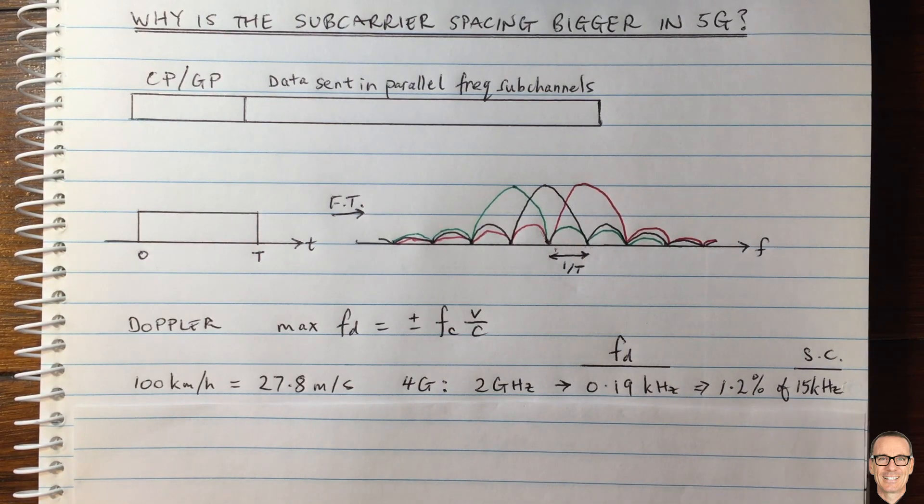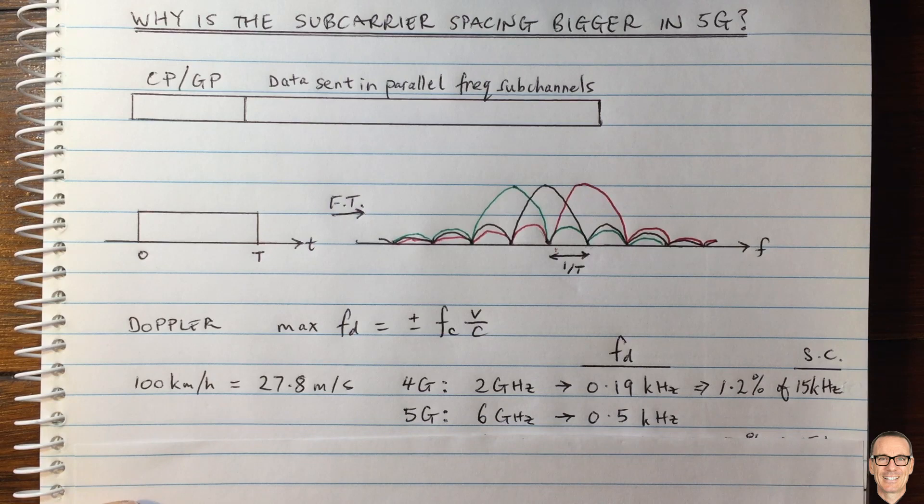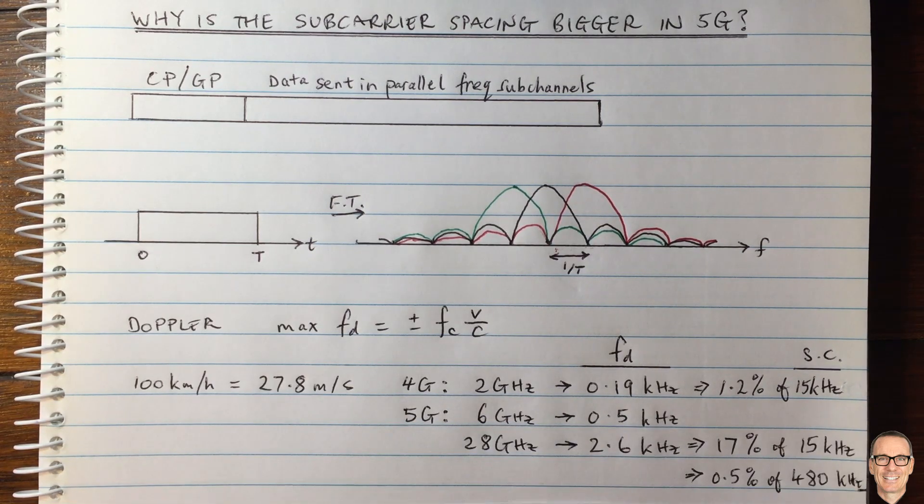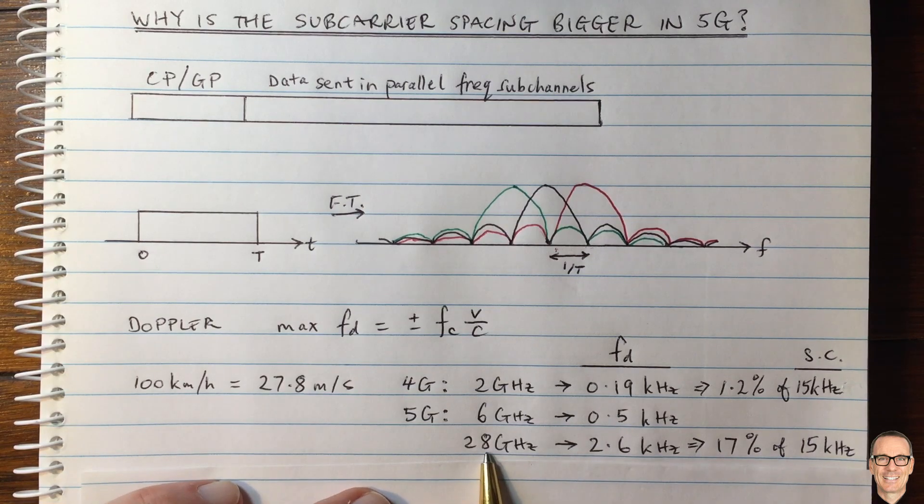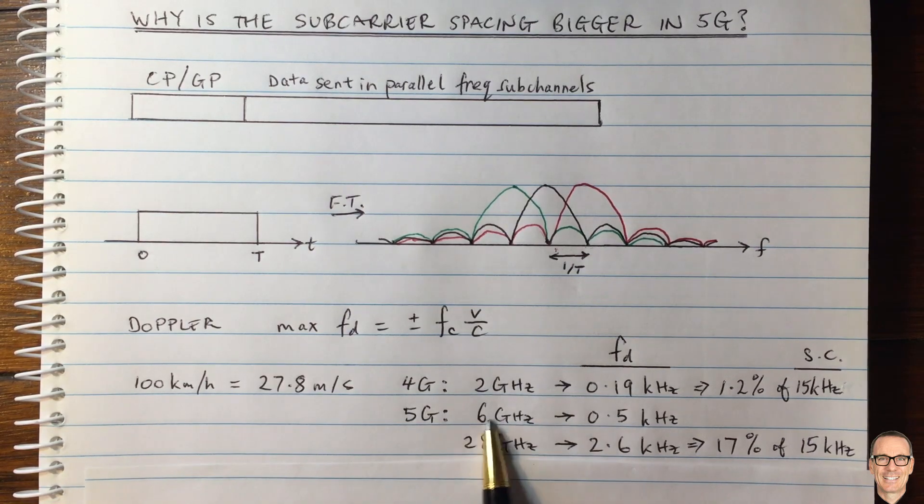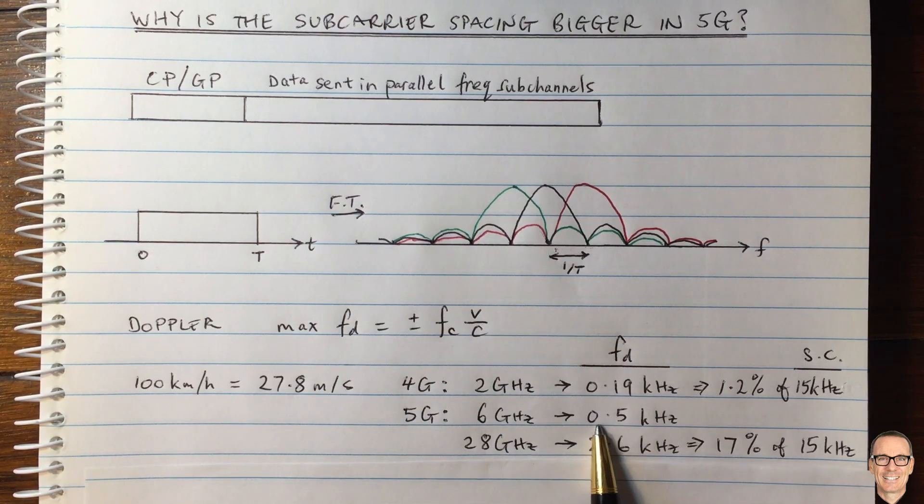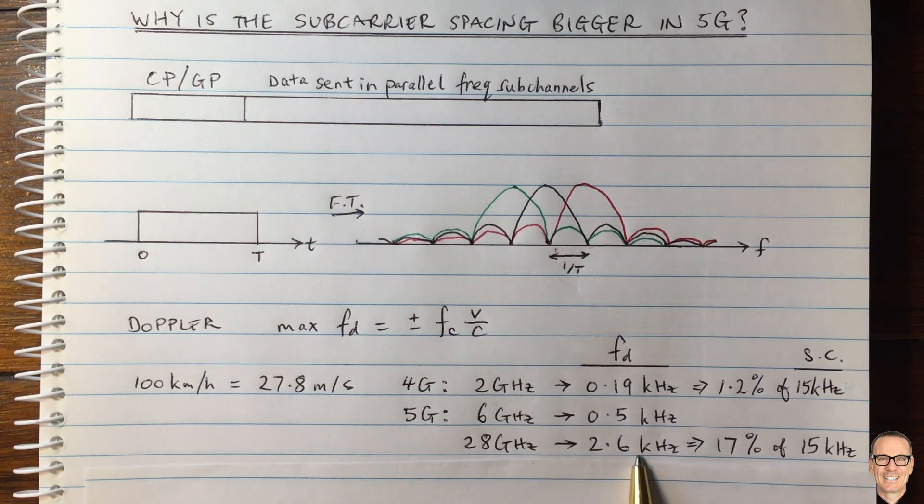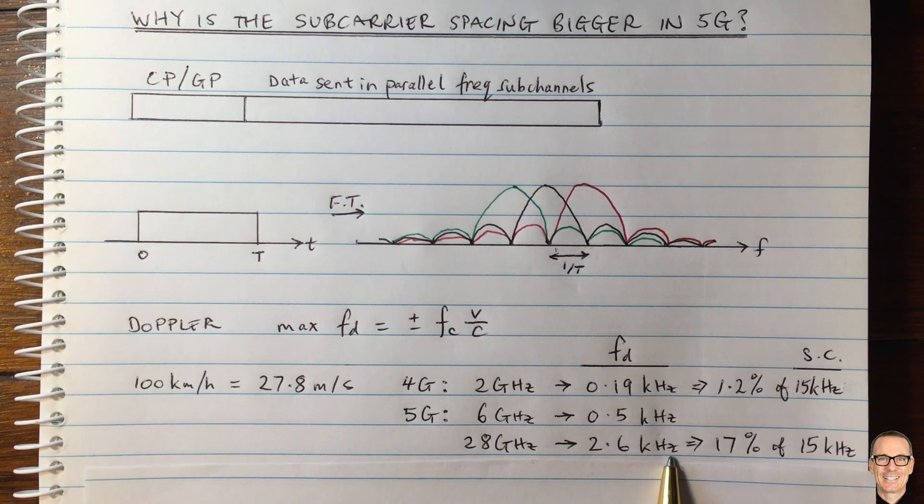Let's think about 5G. And in 5G, we're using higher carrier frequencies, 6 gigahertz and potentially 28 gigahertz. So let's look at in those two cases, we're just with these numbers, 6 gigahertz would give you 0.5 kilohertz of Doppler spread, and 28 gigahertz would give you 2.6 kilohertz of Doppler spread.